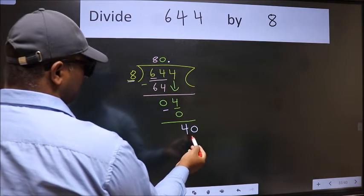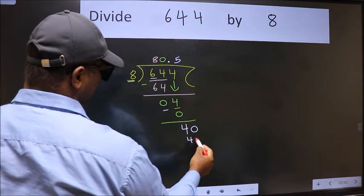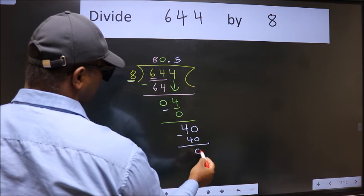So 40. When do we get 40 in the 8 table? 8 times 5 is 40. Now we subtract, we get 0.